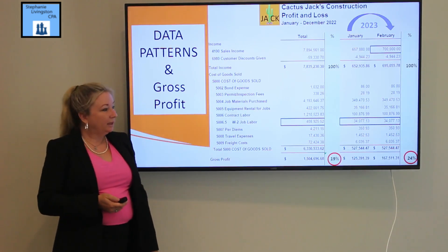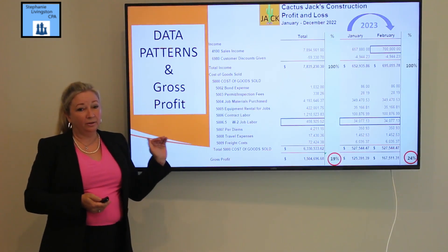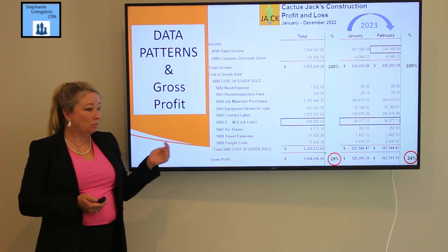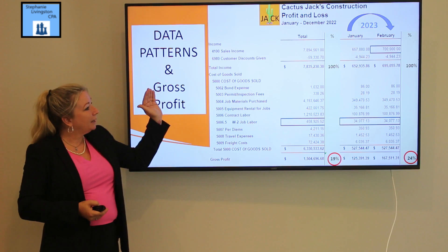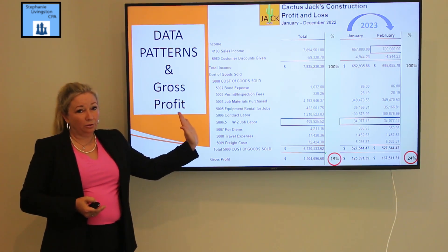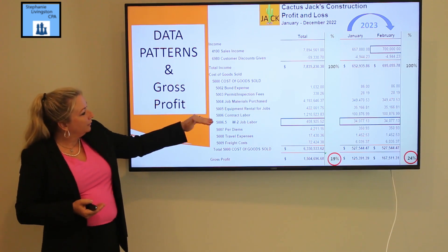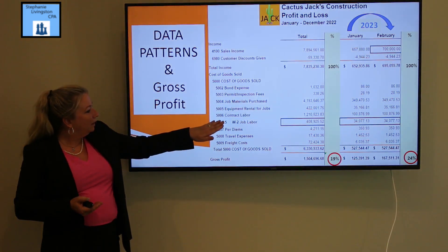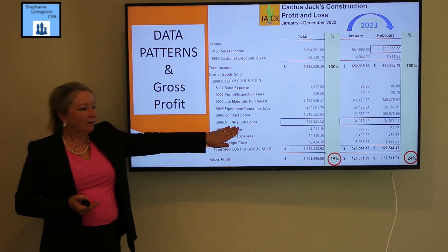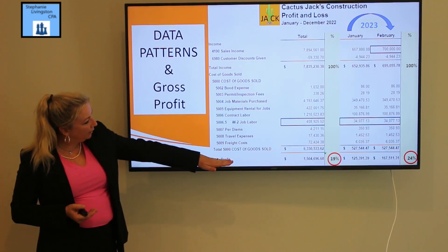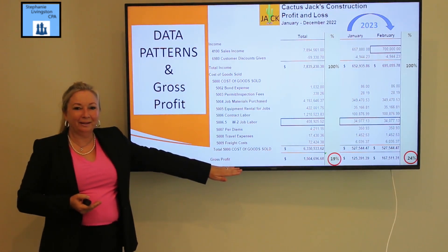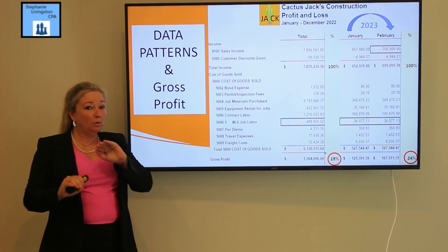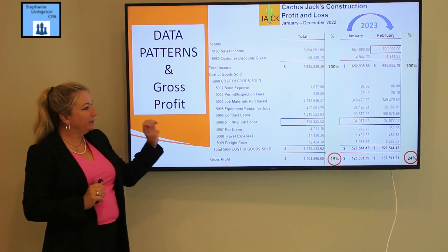Once you get a clear understanding of your top line — meaning you've swept your profit and loss statement and made corrections like this one — you've loaded your top line to include everything that should rightly be included in job performance. Now I have bond expense, permit and inspection fees, equipment rental, and W-2 labor all above the line. My understanding of 19% is now a more complete and accurate picture.